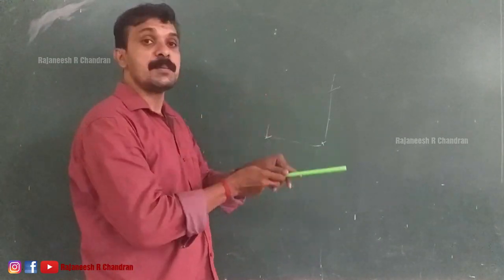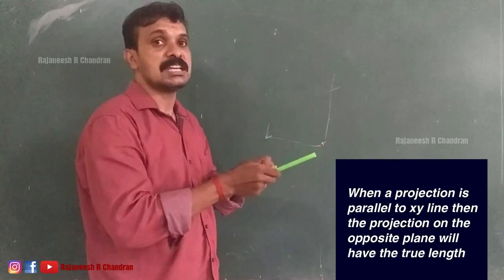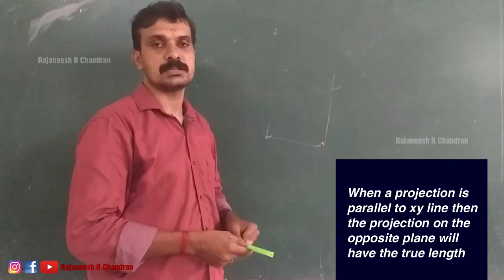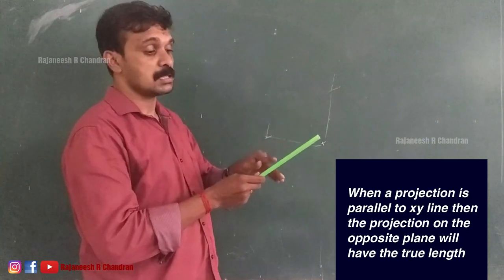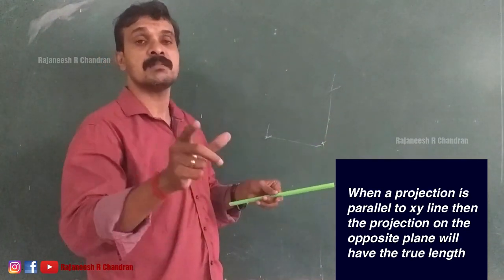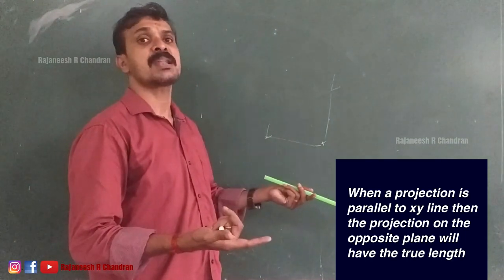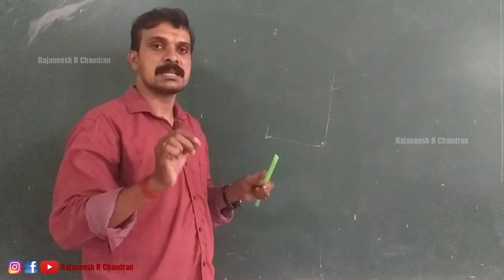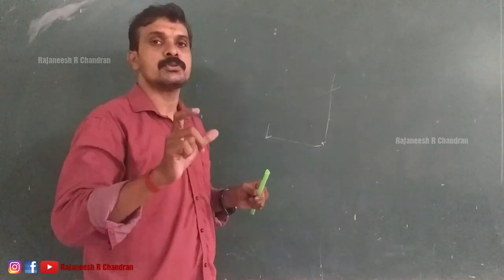There is one more rule, which is the opposite of the previous one: when a projection is parallel to the XY line, its opposite projection will be of true length. So to summarize the three important rules: a line parallel to a reference plane shows true length on that plane; the opposite plane shows a line parallel to XY of shorter length; and if a projection is parallel to XY, the opposite projection is the true length.